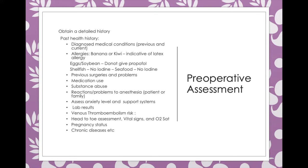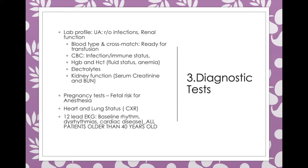Assess for DVTs using the Homans test to ensure no clots that could lead to pulmonary embolism during surgery. Perform a full head-to-toe assessment including vitals and oxygen. Assess pregnancy status in female patients, as some anesthetics are contraindicated in pregnancy. Check for chronic diseases. Everything — vitals, head-to-toe, oxygen — must be stable before sending the patient to surgery. As a pre-op nurse, you have a checklist you must complete.